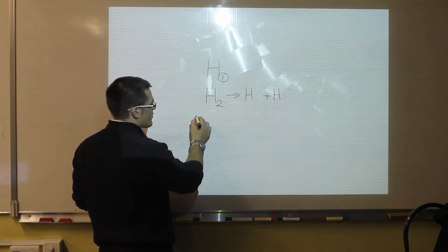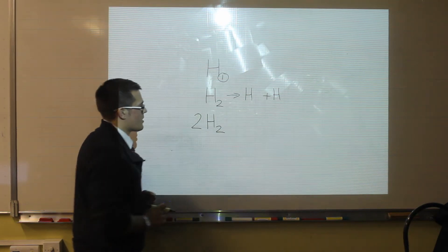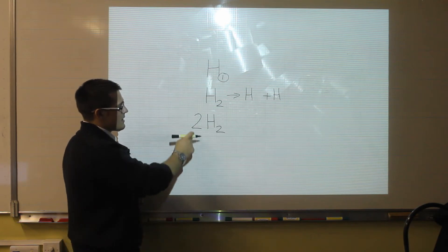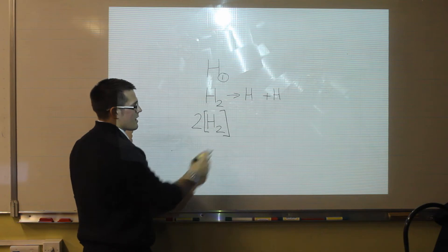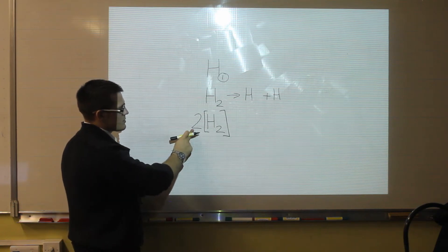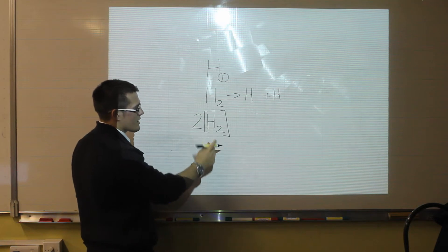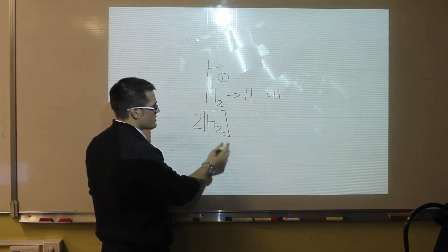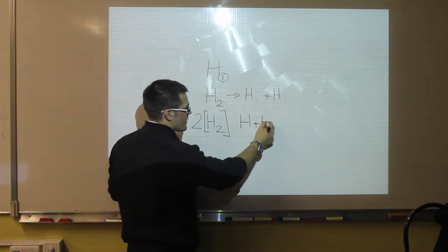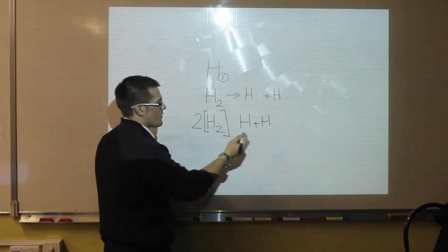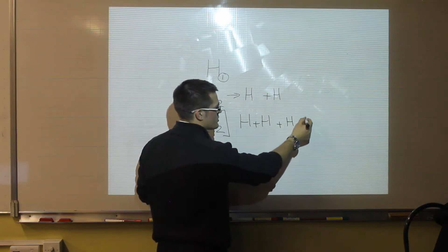If we have a number in front of our formula, for example a large number, then that means we have two of everything in that formula. So for example, this means we have two molecules of hydrogen. Each molecule has two, so we multiply these two numbers together. So we have our first two hydrogens, and then because we've got the two, we have another pair. So in total, we have four hydrogens.